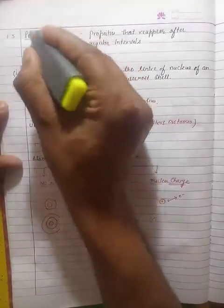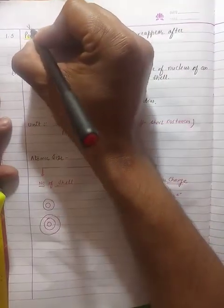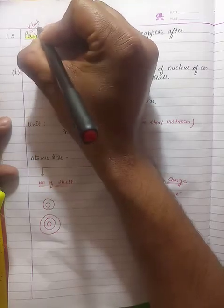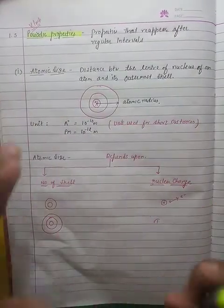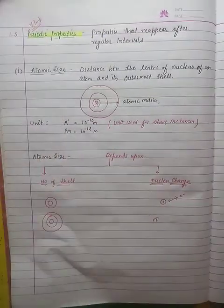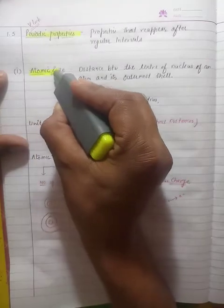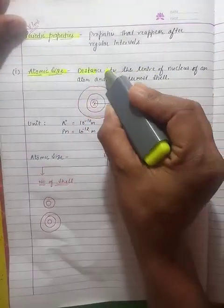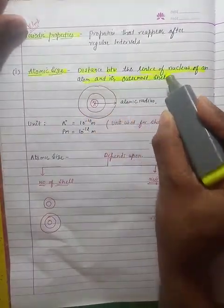So let's start periodic properties — this is the most important topic and carries a significant number of marks. The first periodic property we are going to study is atomic size. Atomic size is the distance between the center of the nucleus to the outermost shell.